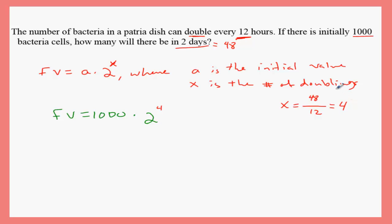12 hours times 4 cycles, that's equal to 48. So this means future value equals 1000 times 2 to the power of 4. 2 times 2 times 2 times 2 equals 16. 16 times 1000 equals 16,000. There are 16,000 bacteria after two days. Your final answer in this question is 16,000.